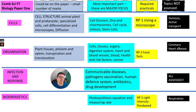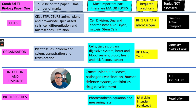In Organisation, hardly anything is taken out — only coronary heart disease. There will be a major focus on digestive system, enzymes, heart, blood vessels, blood, health and risk factors, and cancer. The plant stuff will be a minor focus, so just learn some keywords: know what transpiration is, know what translocation is, and be able to label the parts of a leaf. You will need to know your food tests — Benedict's test for sugars, biuret test for proteins, and the emulsification test for lipids.